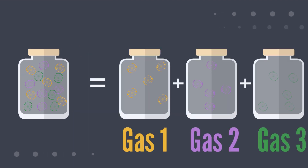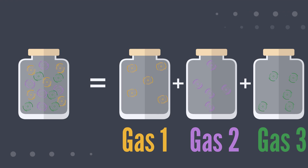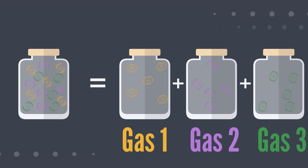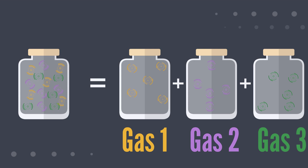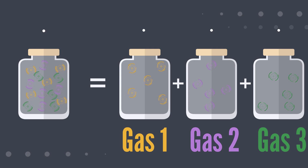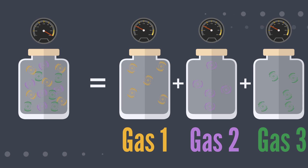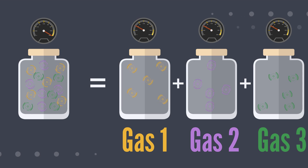Now let's take the same container and spread the gases out equally while holding the volume constant in each container. The sum of the partial pressures of the three gases will equal the total pressure of the mixture of gases. Let's look at the pressure meters above the gas chambers to notice that each partial pressure of the individual gases equals the pressure of all the gases in the same container.